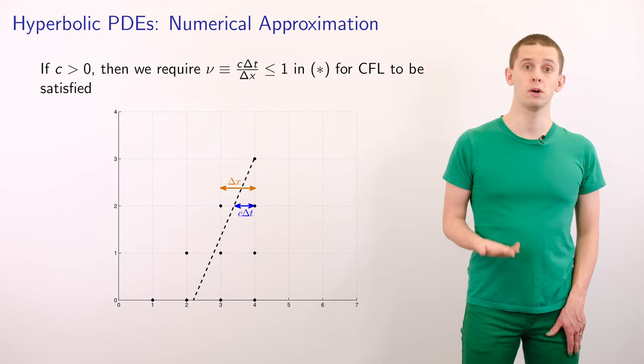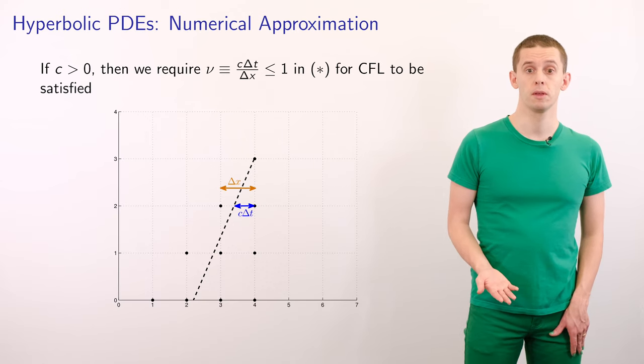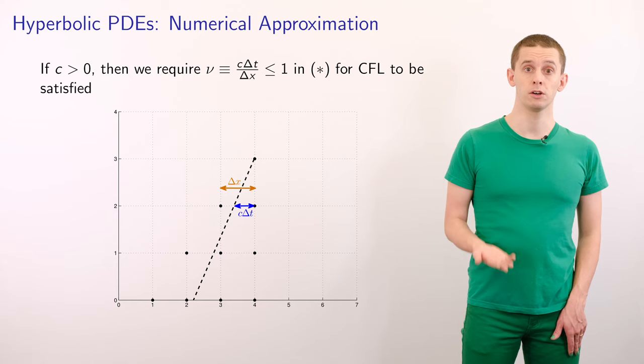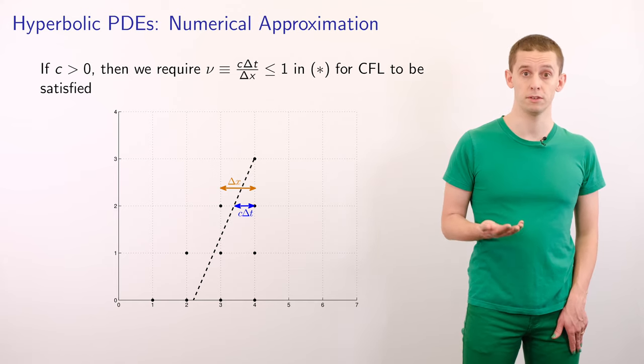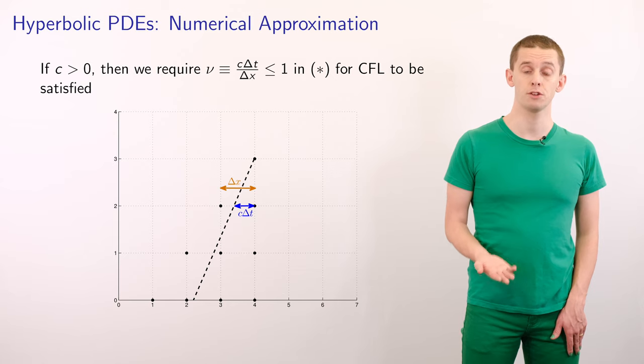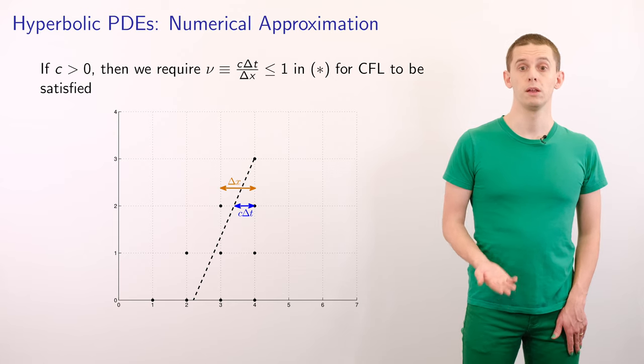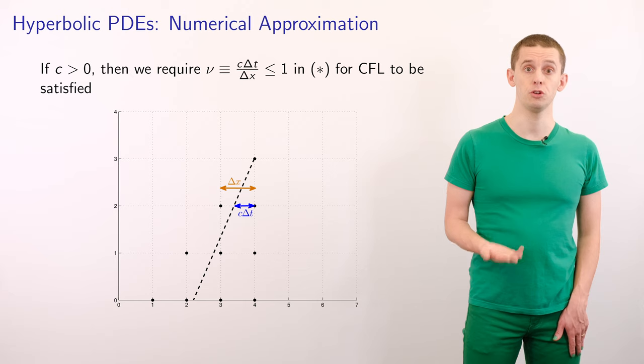Suppose we look at the case where c is greater than 0. Then we require that our constant nu, defined as c times delta t divided by delta x, has to be less than or equal to 1 for the CFL condition to be satisfied.